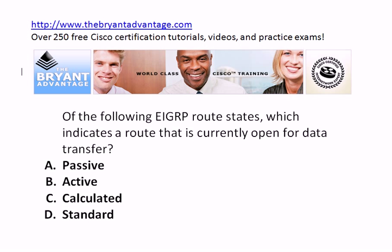The route state we actually want here is passive. Calculated and standard are red herrings — they're not actually EIGRP route states. Our EIGRP routes are either going to be active or passive. It would sound like we'd want active, but an active route is currently being calculated by DUAL and is not open to carry data. A passive route is not currently being calculated, and therefore it is available.